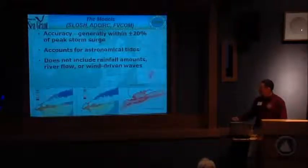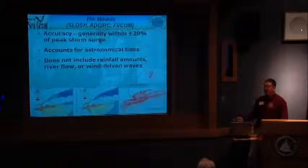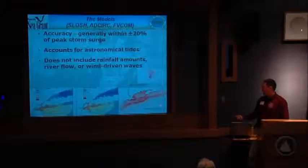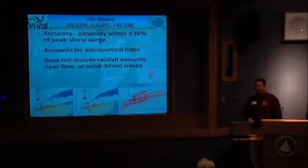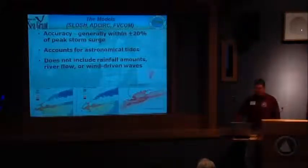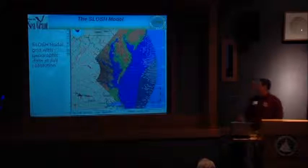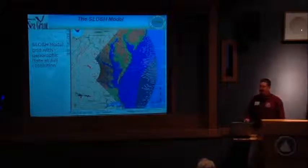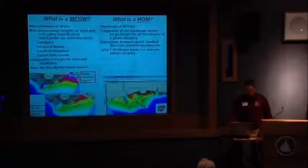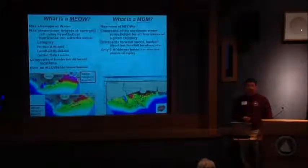There are other models: ADCIRC (advanced circulation) and FVCOM, which has a larger global model informing a smaller nested model. Each step is much more computer-intensive, time-intensive, and money-intensive. SLOSH model grids are fairly coarse — they get finer in some areas — while ADCIRC and FVCOM use much, much finer grids. Since we were waiting for higher-resolution LIDAR anyway, we went cheap and easy to begin with.